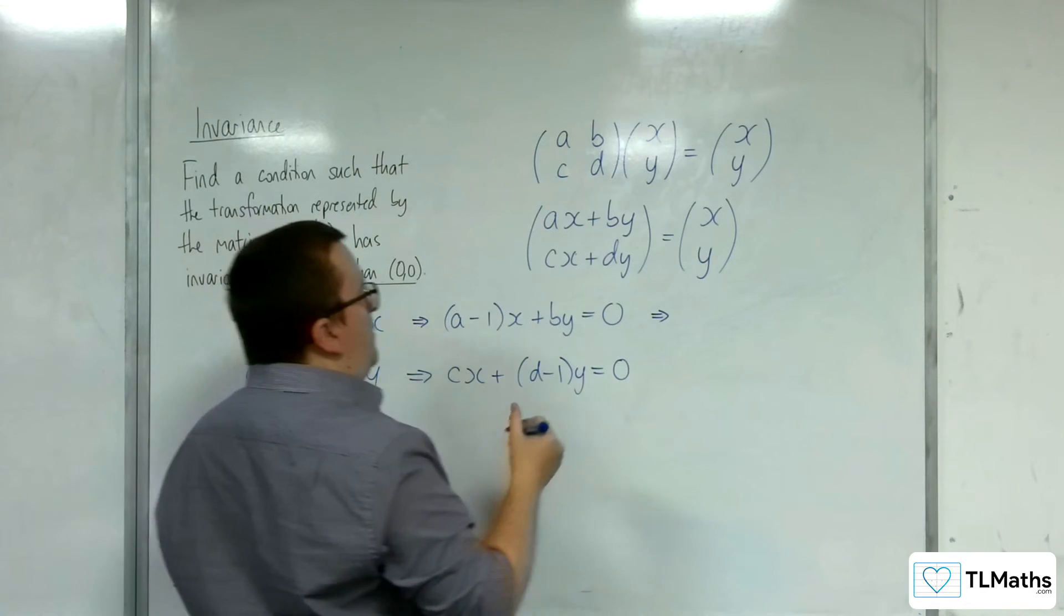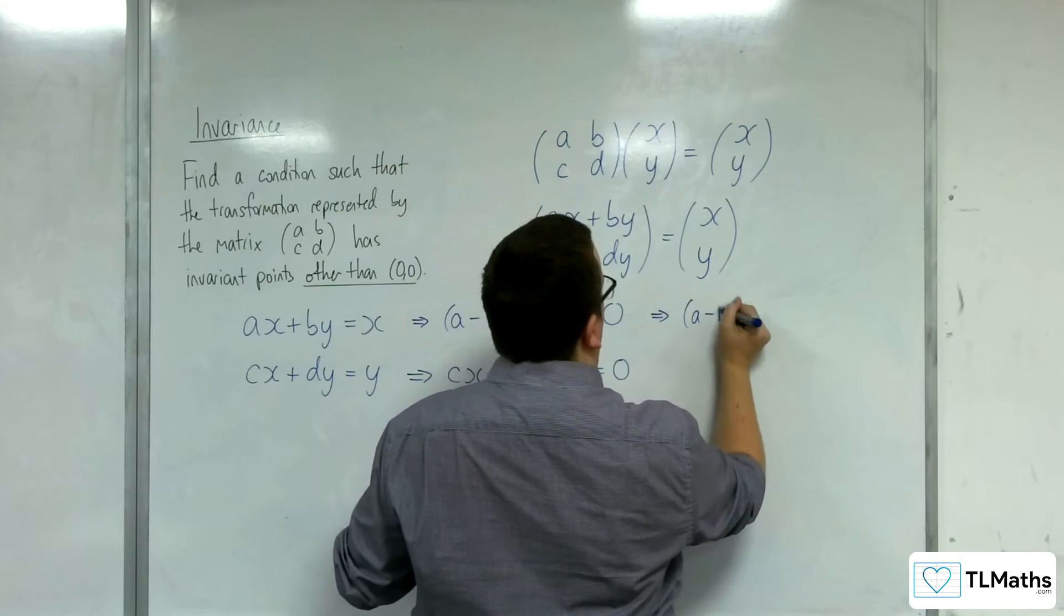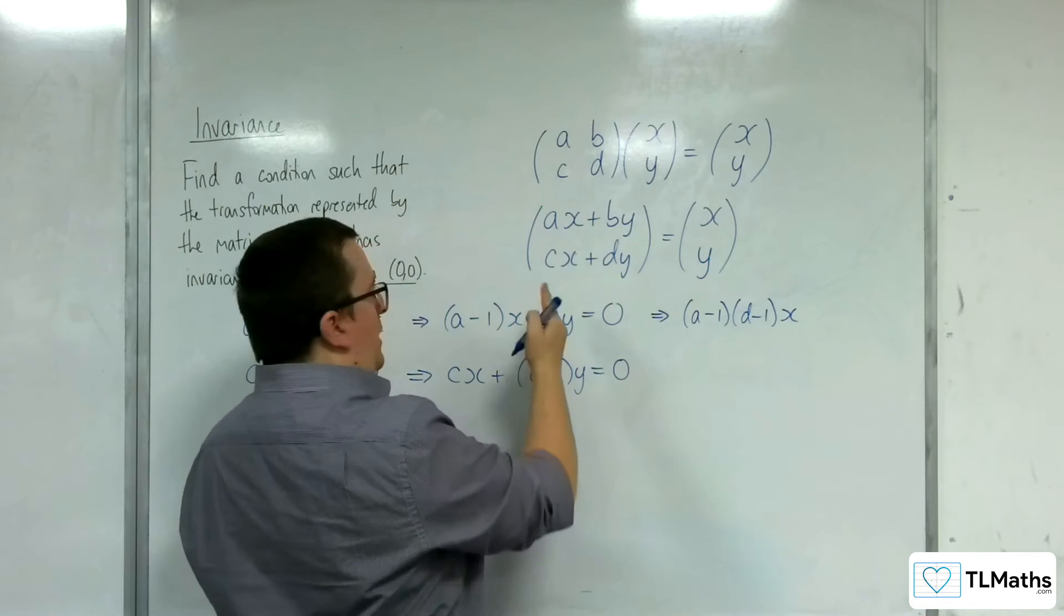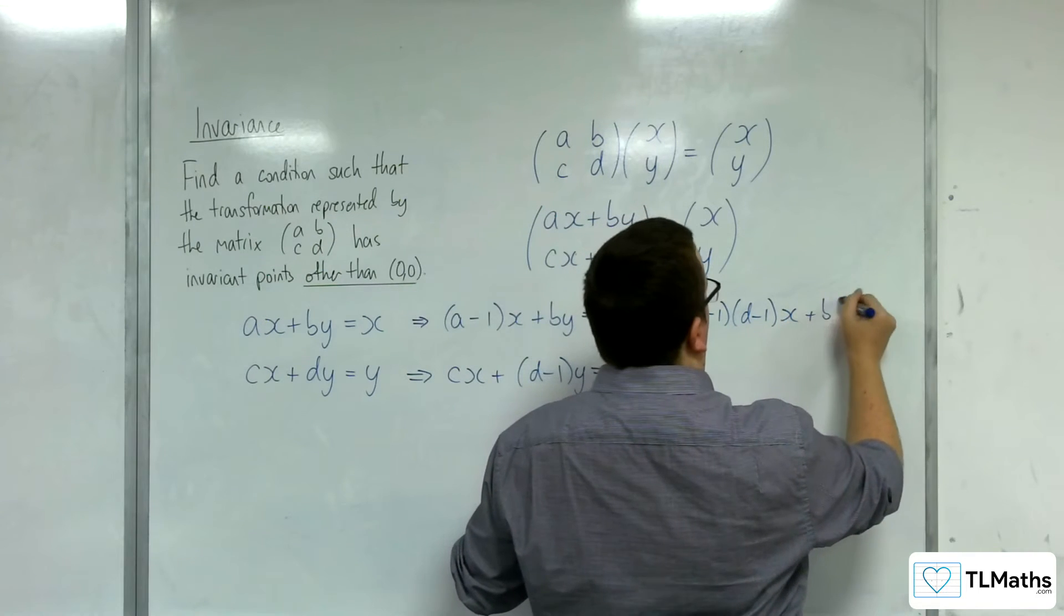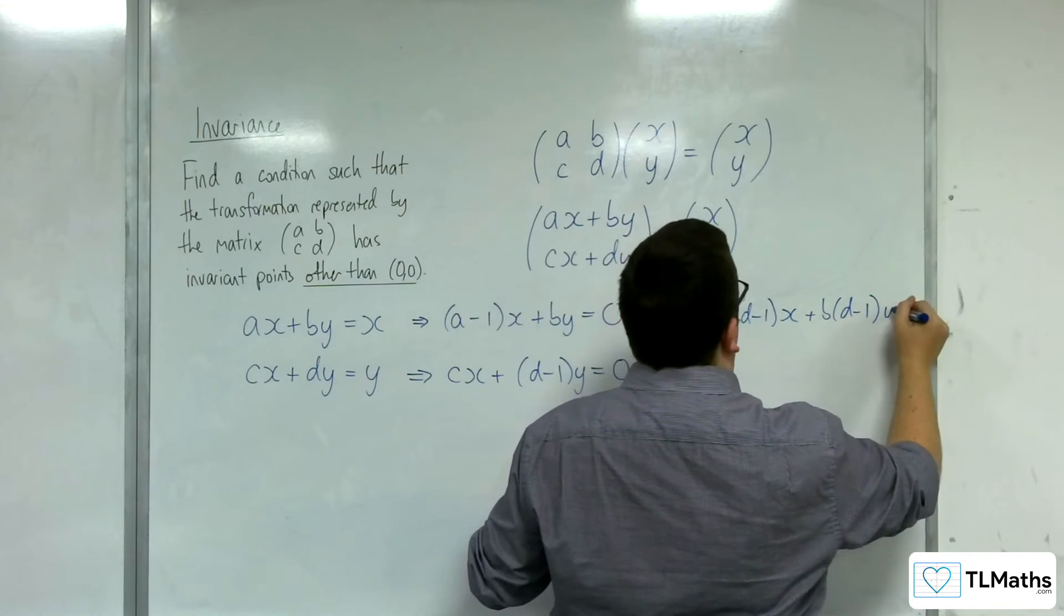I'm going to multiply this through by (d-1). So (a-1)(d-1)x + b(d-1)y equals 0.